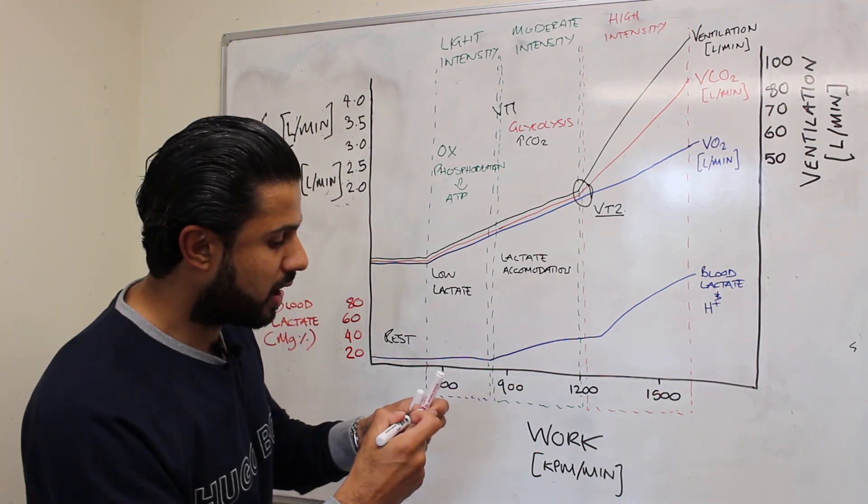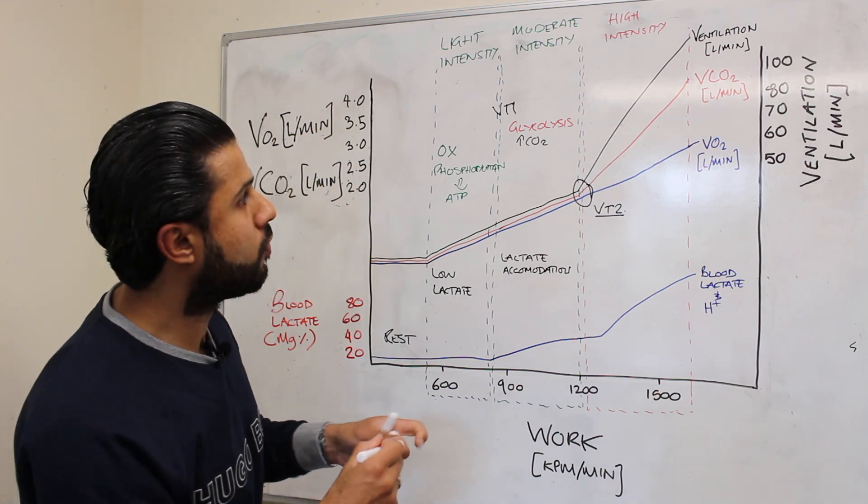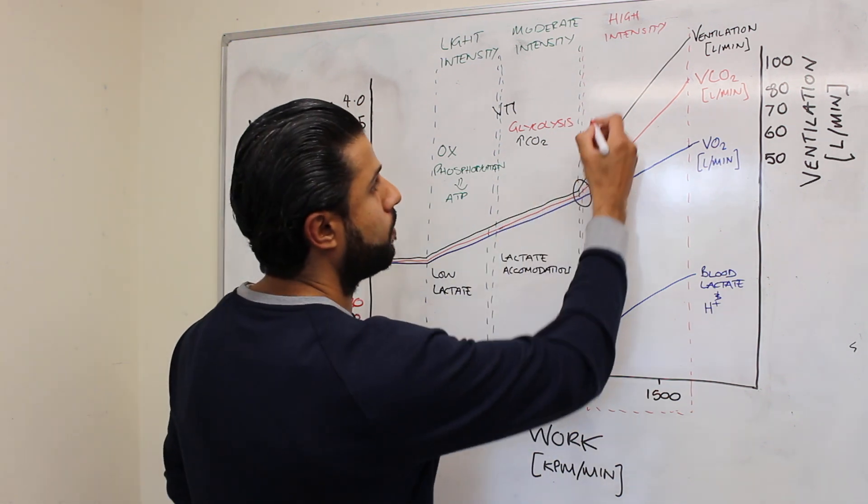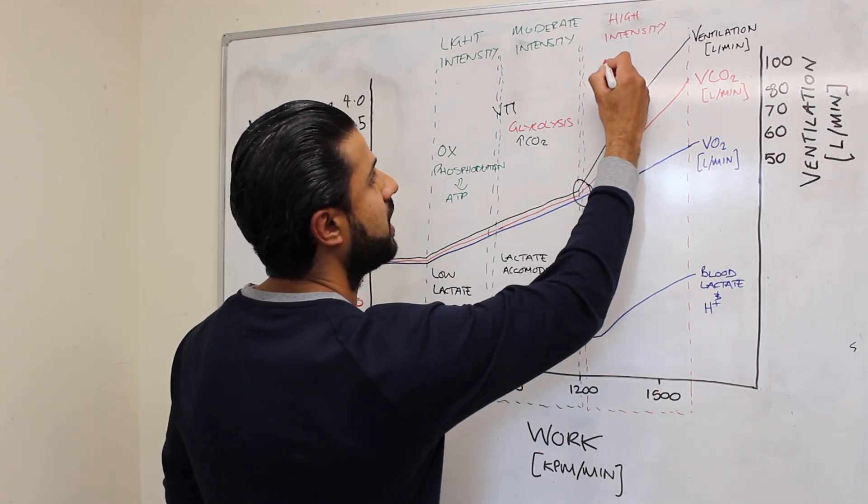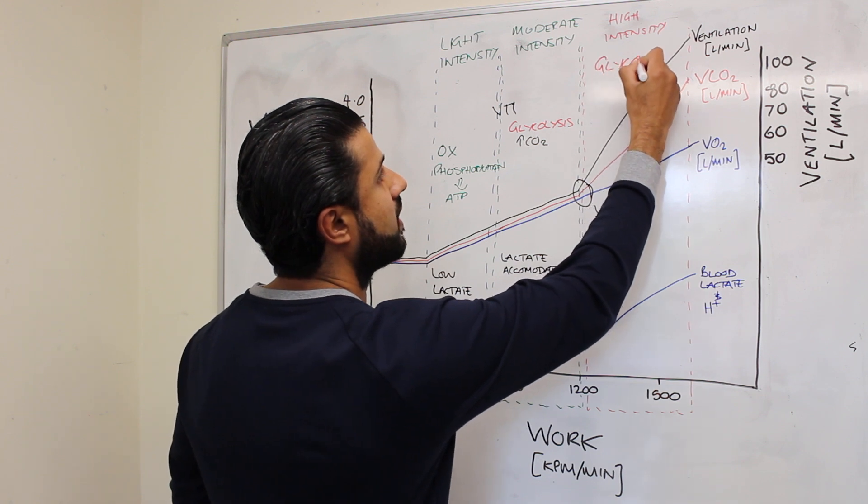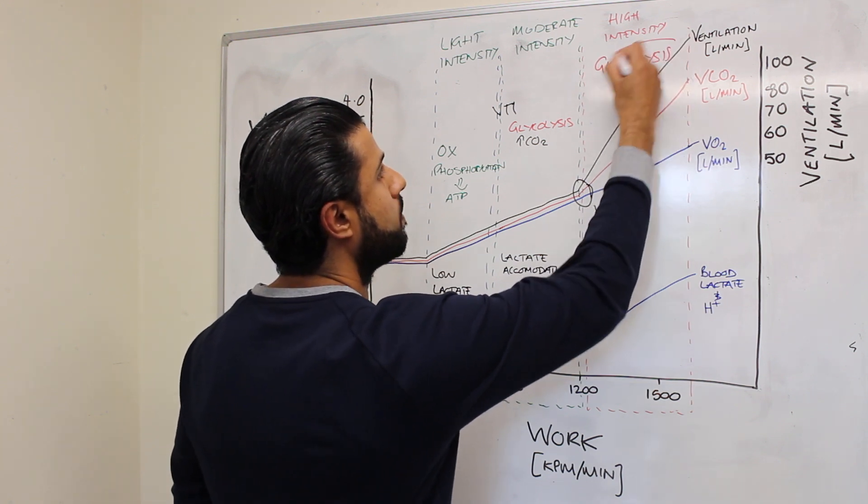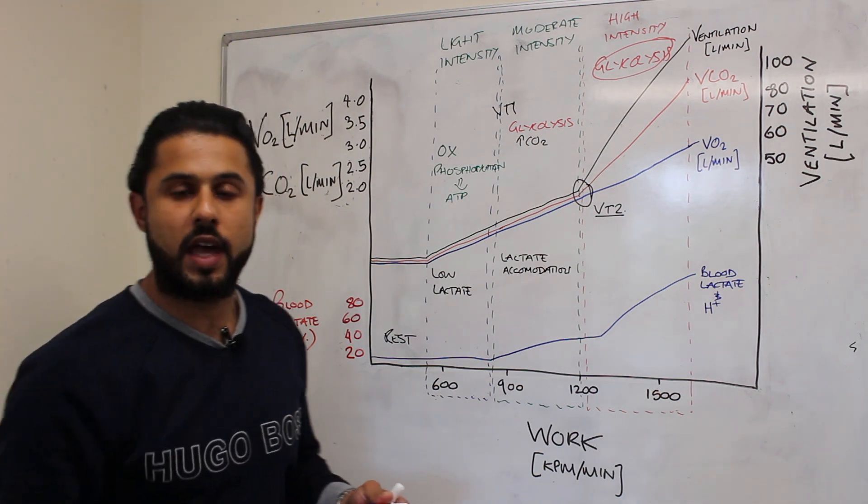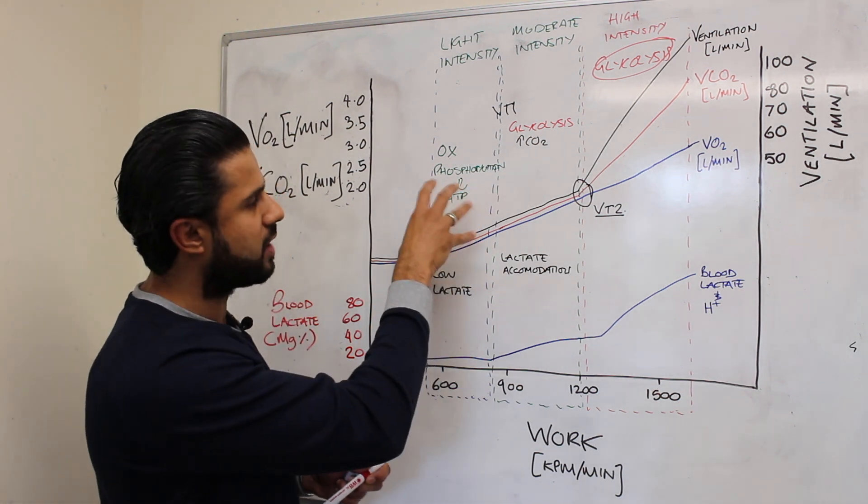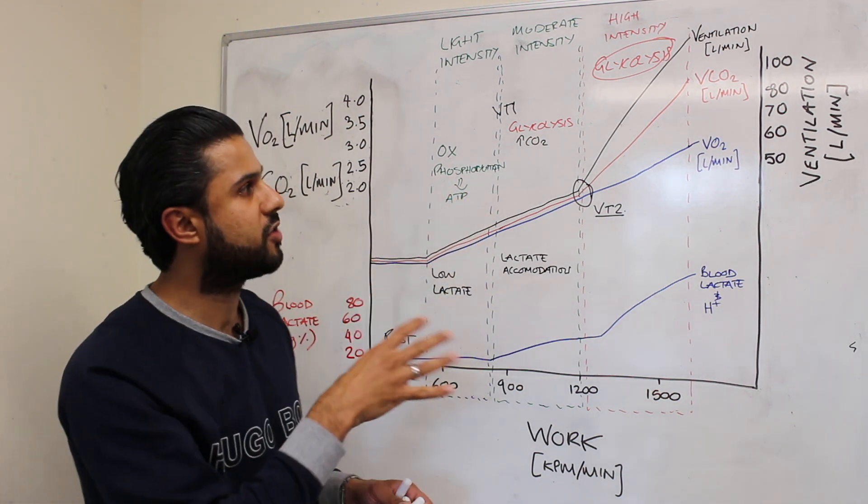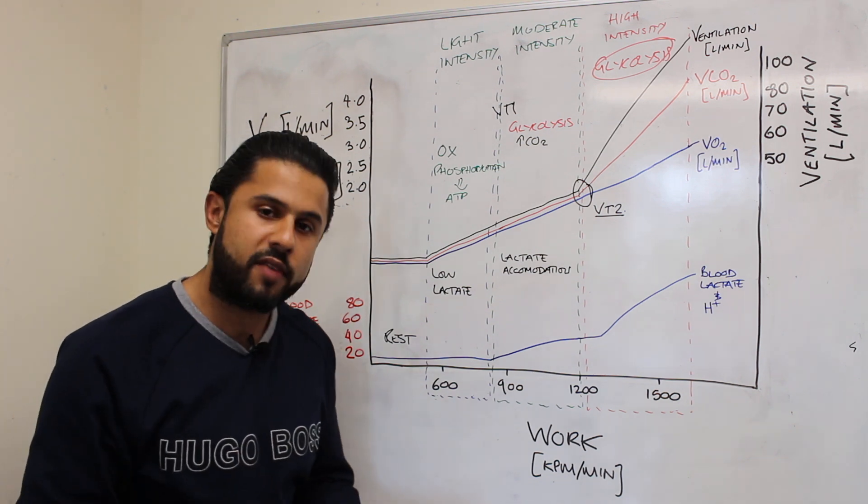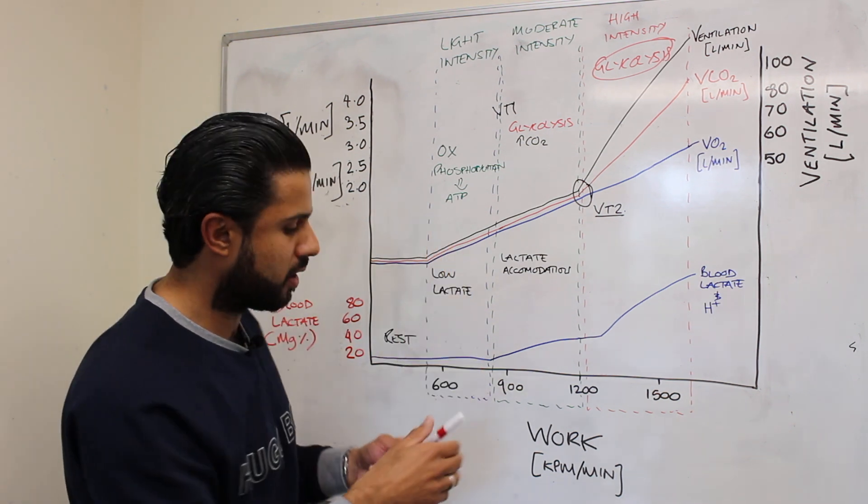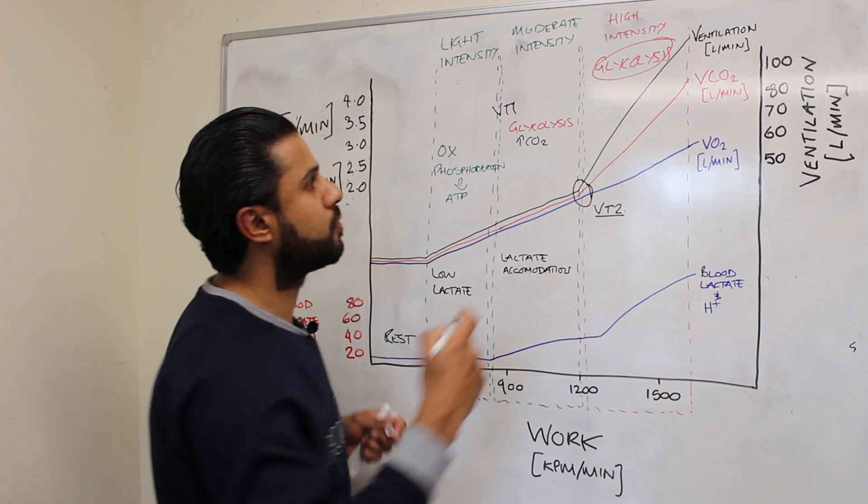To the point where in the high intensity phase glycolysis is the major source of ATP. So we're having hardly any reliance on oxidative phosphorylation and what that means is that whenever we rely completely on glycolysis our CO2 levels are going to go through the roof.